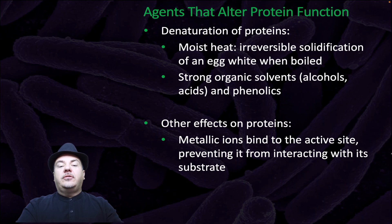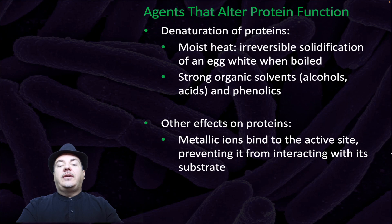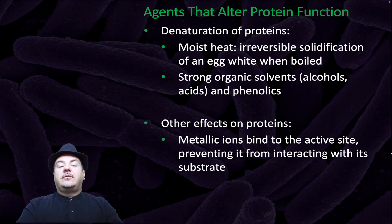Agents that alter protein function include denaturation by moist heat — the irreversible solidification of an egg white when boiled is an example. Strong organic solvents, alcohols, acids, and phenolics also denature proteins. Other effects on proteins include metallic ions binding to the active site, preventing it from interacting with its substrate.